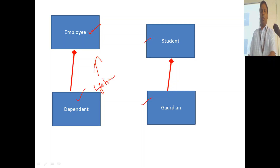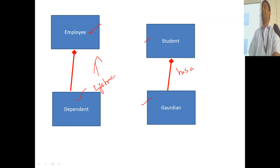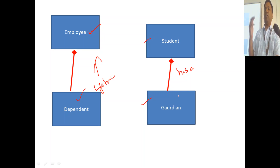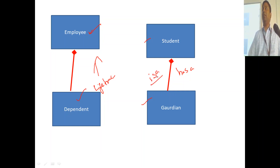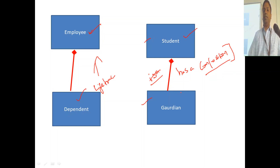Student has a guardian. An important thing to understand here is guardian is not a student — there is no 'is-a' relationship. When it is 'is-a', it is actually inheritance. When it is 'has-a', it is actually a type of association — you can call that composition. Whenever you delete one object, the other object will also automatically go out of scope. That is composition.